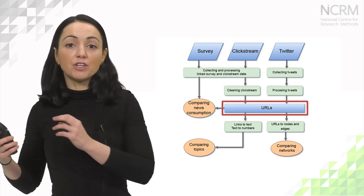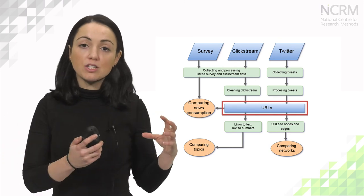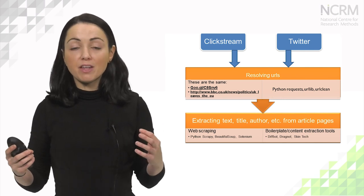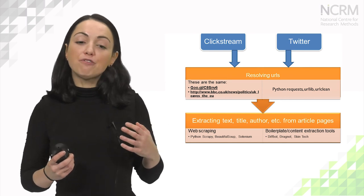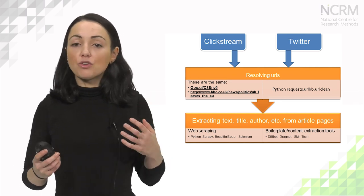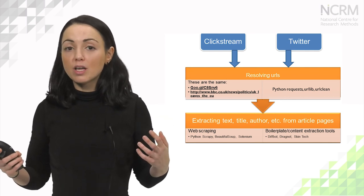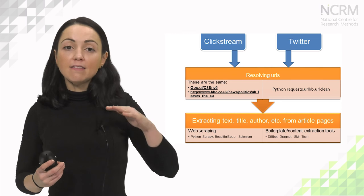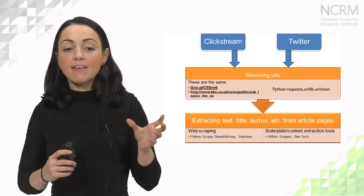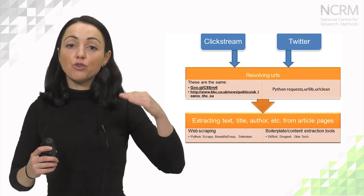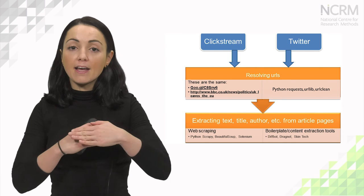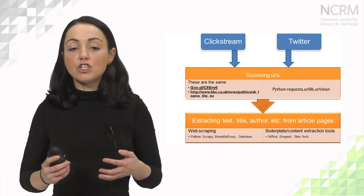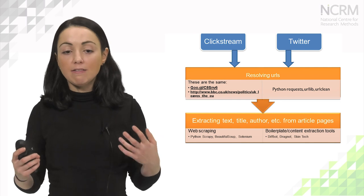We have links from clickstream data and links from tweets. The next step is to resolve those URLs — that is, expand them. For example, the same BBC article titled 'UK leaves the EU' can appear in the data as a shortened link. We want to ensure we end up with a single, expanded version of each article URL. We use Python and a number of Python packages to resolve and expand the URLs.